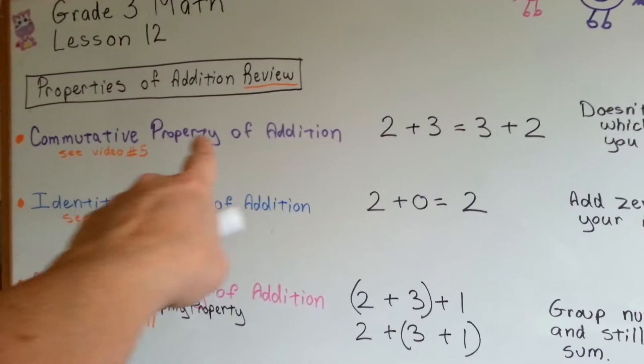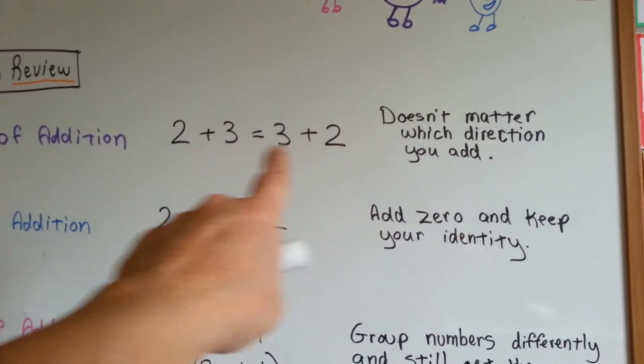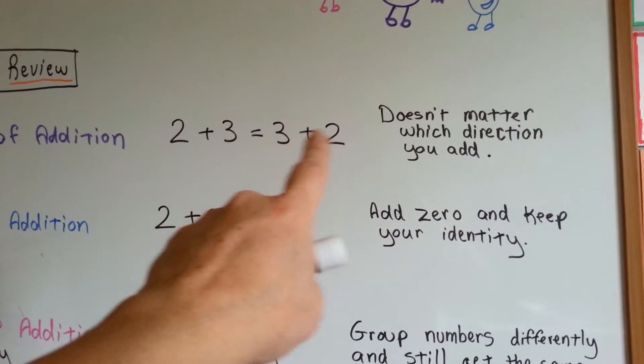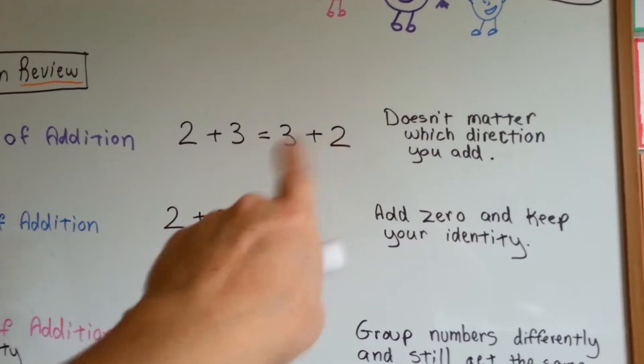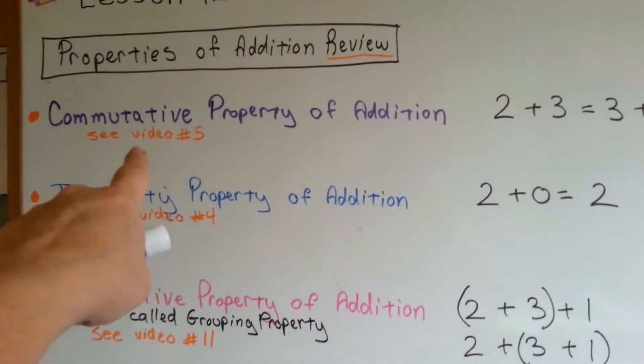So, the commutative property of addition says it doesn't matter which direction you add the numbers, you're going to get the same answer. 2 plus 3 or 3 plus 2. Either way, it's going to be 5. To get more information on it, you can see video number 5.